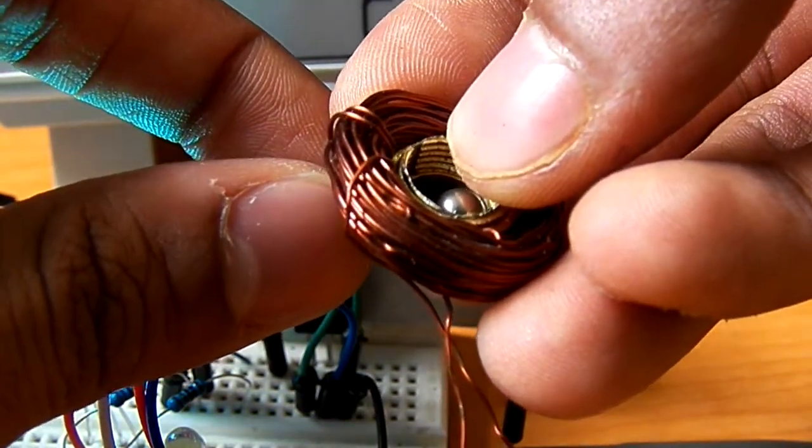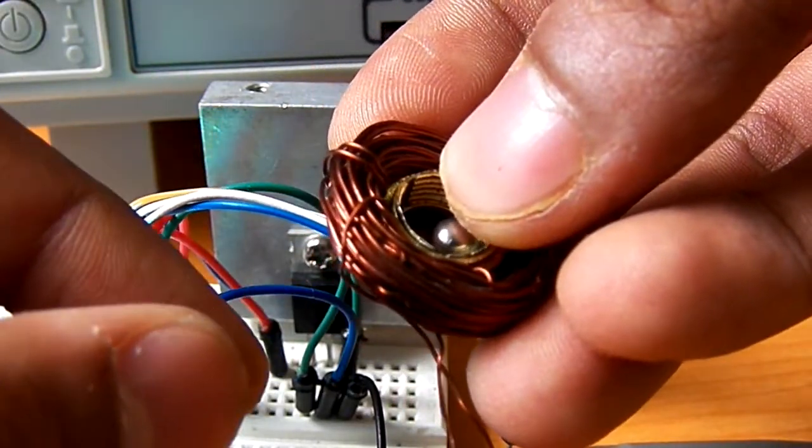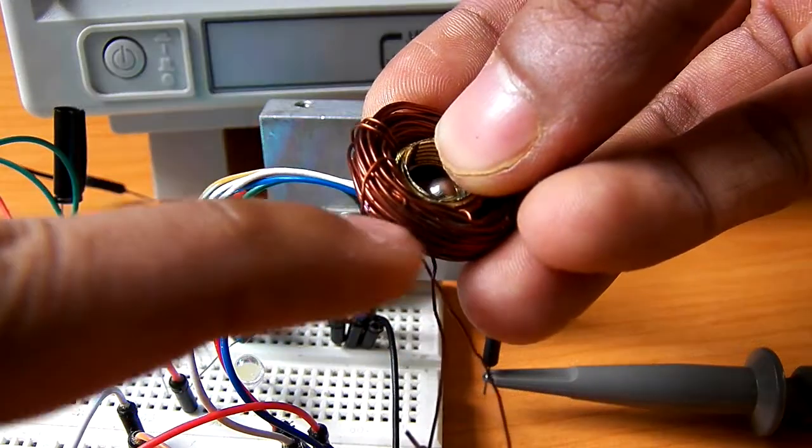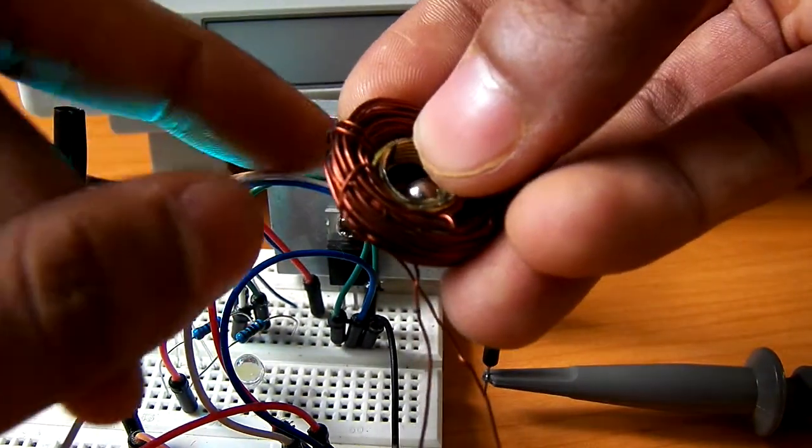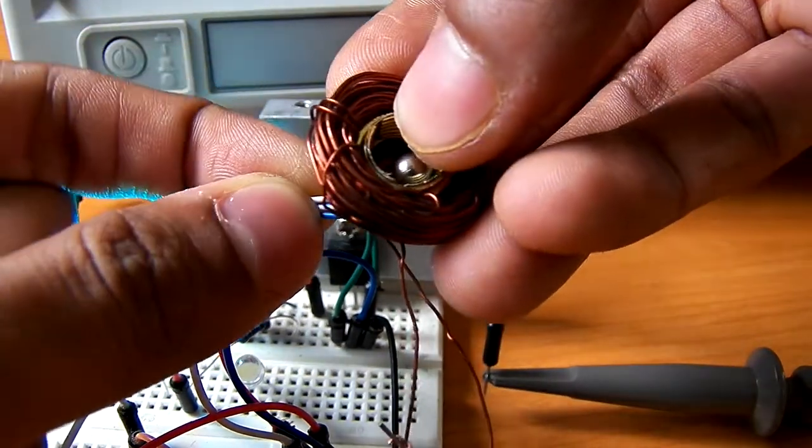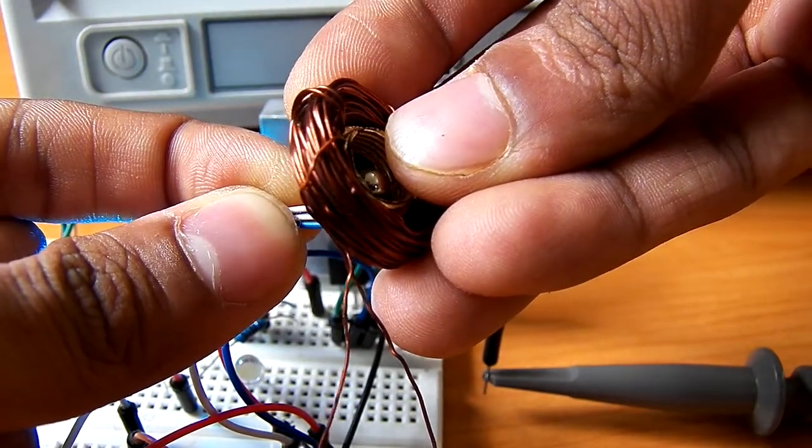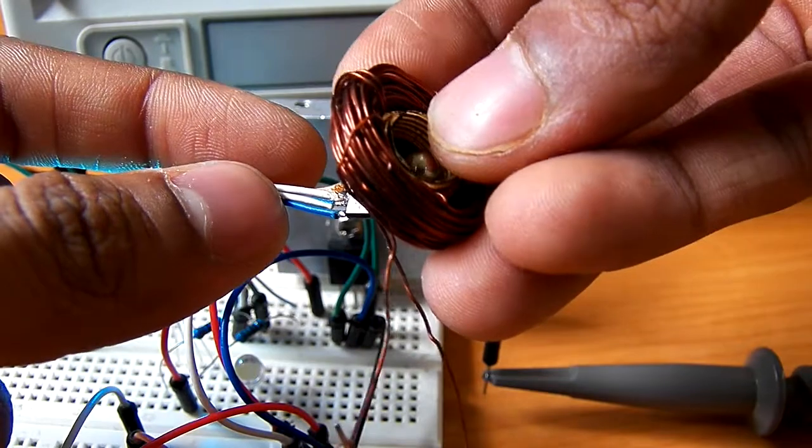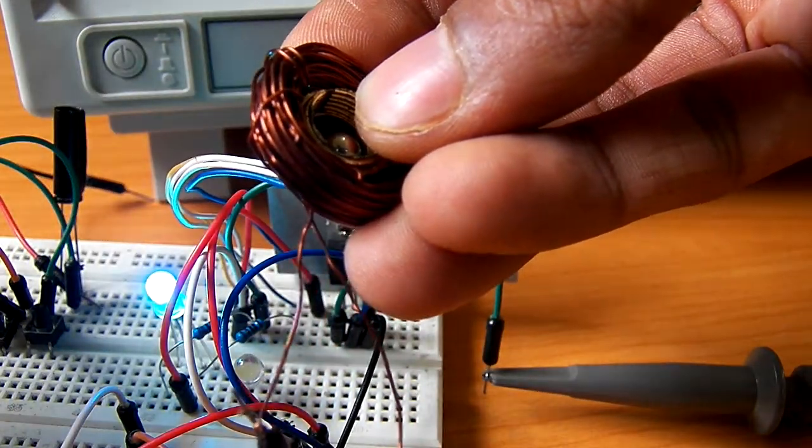The closer you get, the higher speed the motor can run. Also the distance between the coil and this ball does matter. It is now possibly closest. Now it is 2.1 MHz in between.